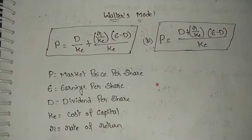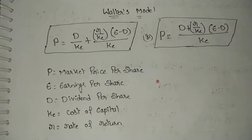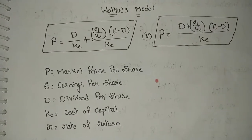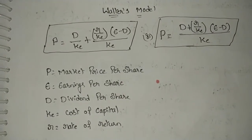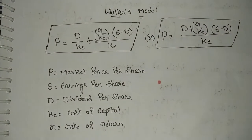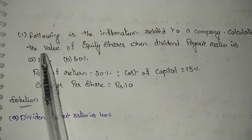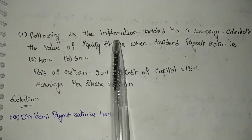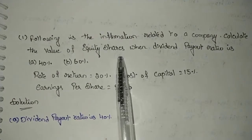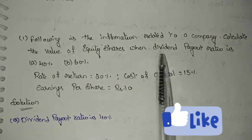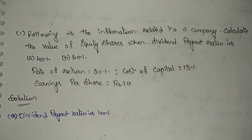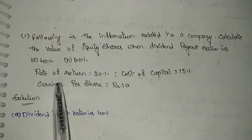By using this formula, we will go for calculating the value or market price of shares according to Walter's model: P equals D divided by KE, plus R divided by KE, into E minus D, whole divided by KE. Let us see the problem. Calculate the value of equity shares when dividend payout ratio is 40% and 60%.